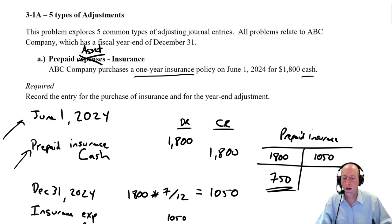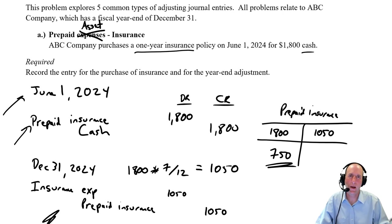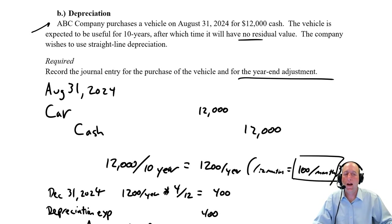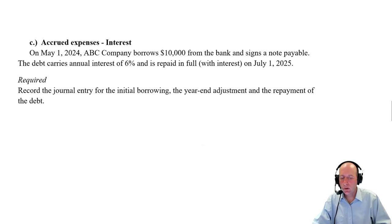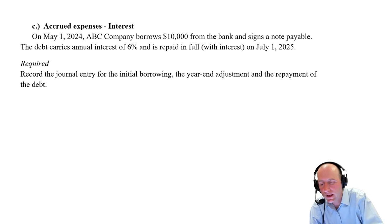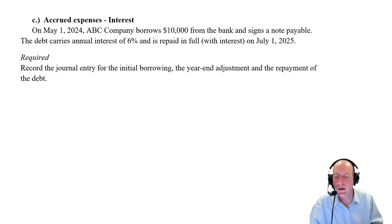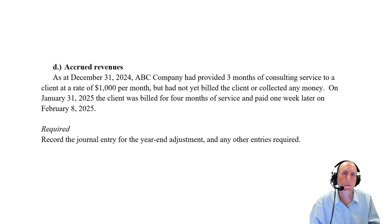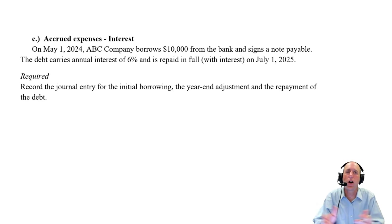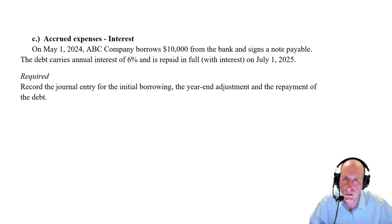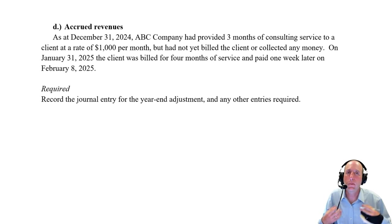So far we've learned two types of adjustments: prepaids, where you buy something in advance and use up its value over time — insurance being a great example — and depreciation, where you buy an asset and the accountant must estimate and record value lost over time. Next is accrued expenses: expenses that have built up but haven't been paid yet, which create a payable. And accrued revenues are revenues that have built up but haven't been received yet, which create a receivable.